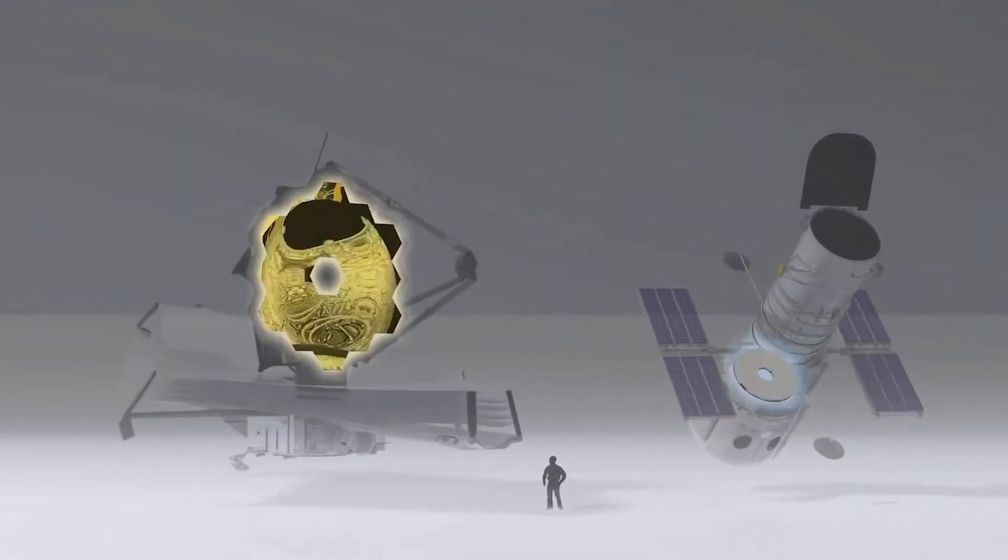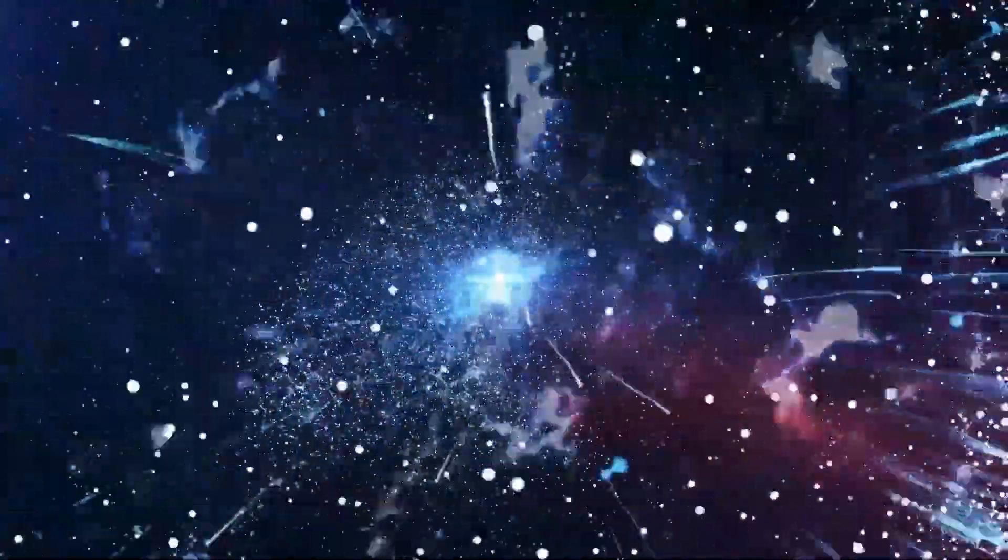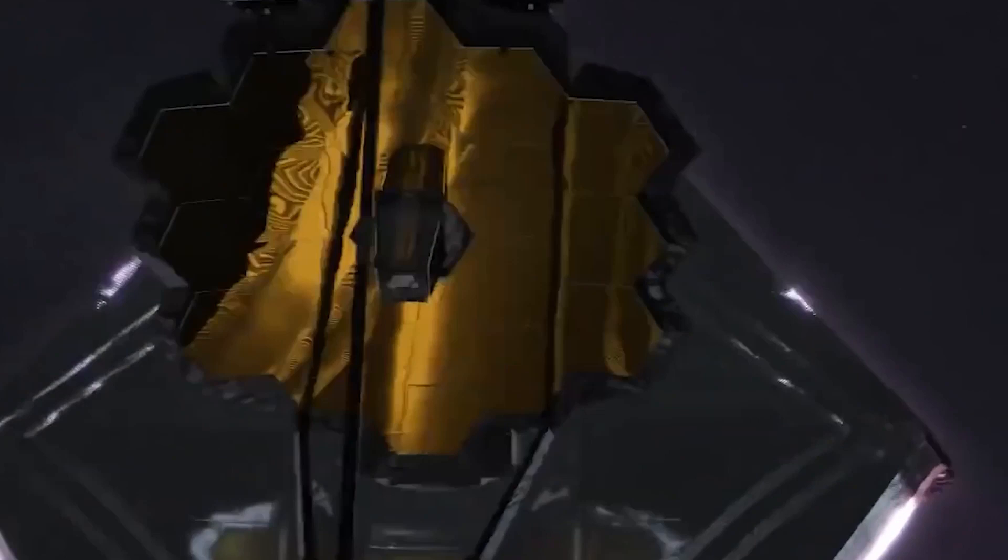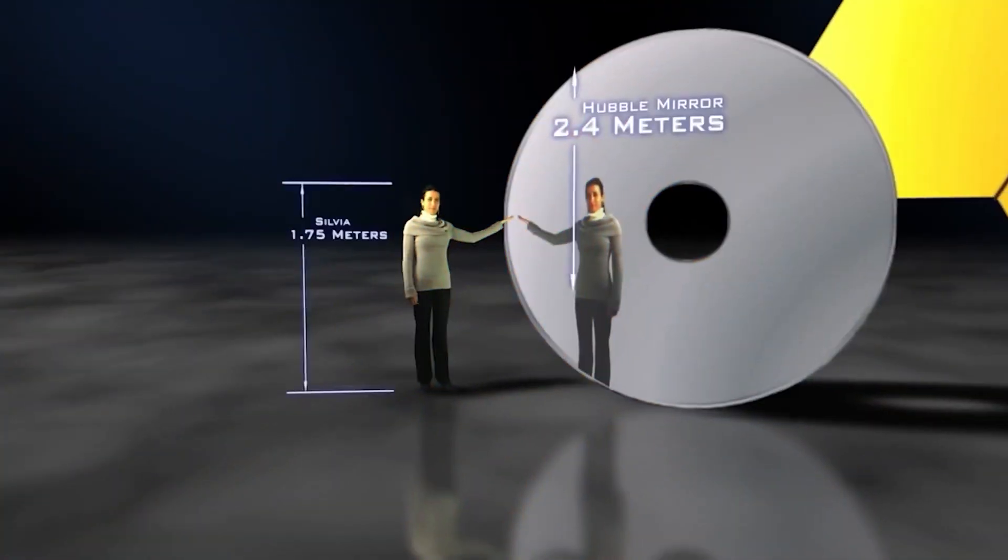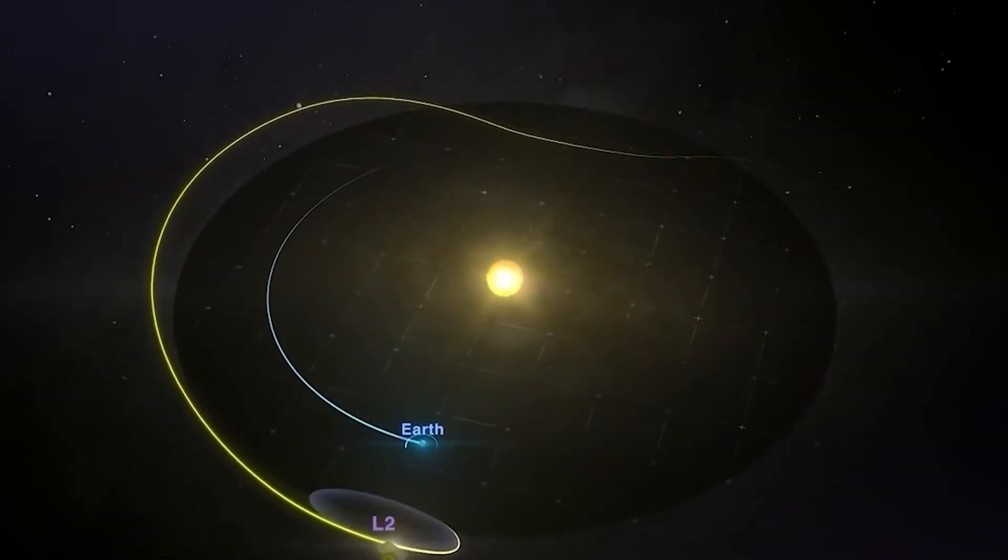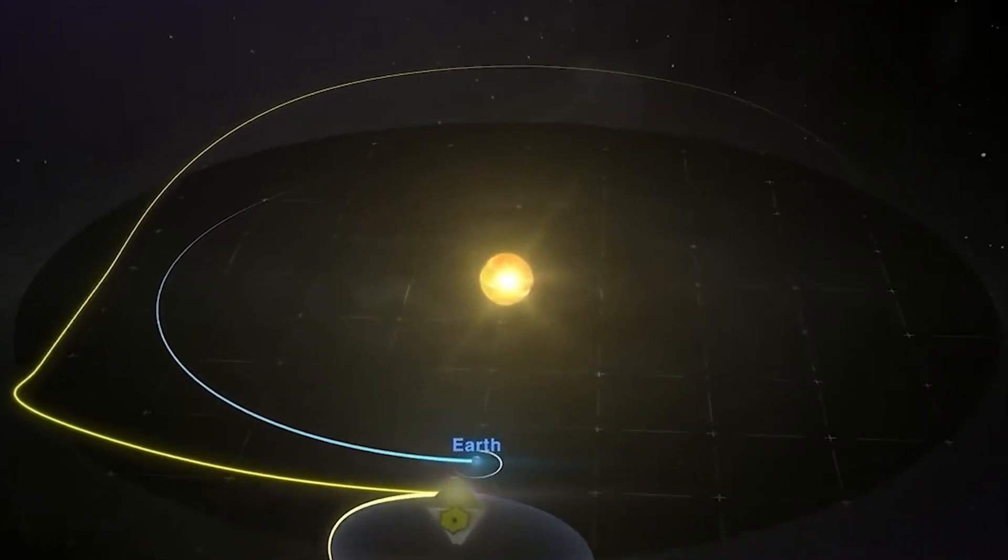What is Proxima Centauri, actually? Proxima b was discovered in 2016 and is expected to be a rocky, terrestrial planet that is somewhat larger than Earth, with some scientists predicting that it could have liquid water. We discovered a signal from the direction of Proxima Centauri, our nearest neighbor star, in late 2020.